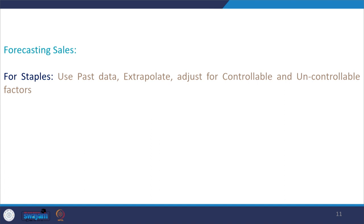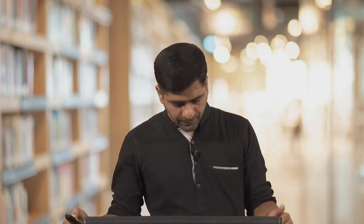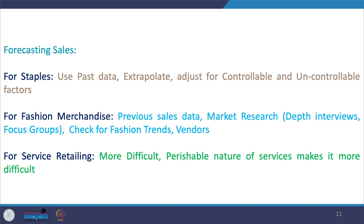Controllable factors are those within the control of the retailer; uncontrollable factors are beyond the retailer's control but still impact demand estimation for staples. When accounting for controllable factors, one key consideration is the prices set for products — lower prices can foreseeably increase demand for categories with high elasticity.